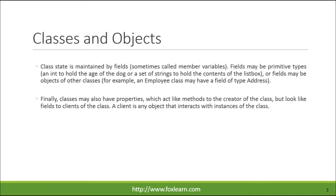Class state is maintained by fields, sometimes called member variables. Fields may be primitive types, such as an int to hold the age of the dog, or a set of strings to hold the contents of the listbox, or fields may be objects of other classes. For example, an employee class may have a field of type address.